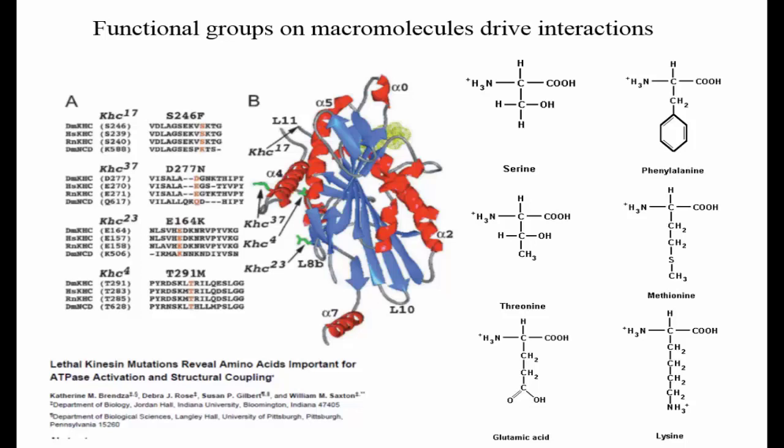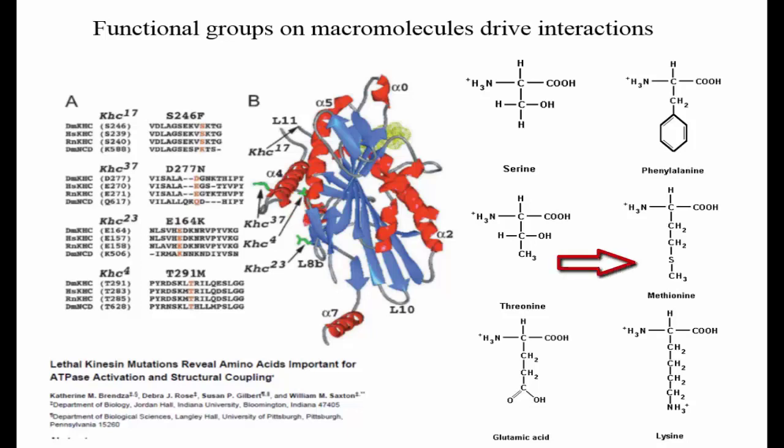Certain functional groups on the amino acid side chains play pivotal roles in the structure and function of kinesin. When the group mutated residue 246, found between the ATP binding and microtubule binding domains, from native serine to phenylalanine, they replaced a polar hydroxyl group with a nonpolar bulky aromatic residue. This reduced kinesin's ability to release the bound and cleaved ATP from its active site, deactivating kinesin from walking. When residue 227, near the microtubule binding surface, was mutated from threonine to methionine, replacing a smaller polar group with a longer sulfur-containing alkyl chain, kinesin was inhibited from binding to the microtubule, though it could still bind and cleave ATP.